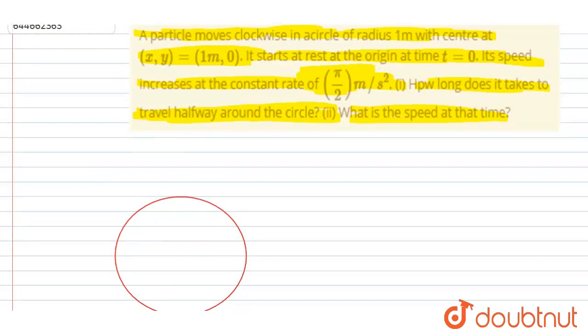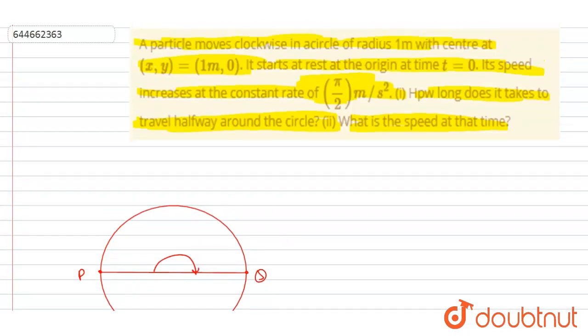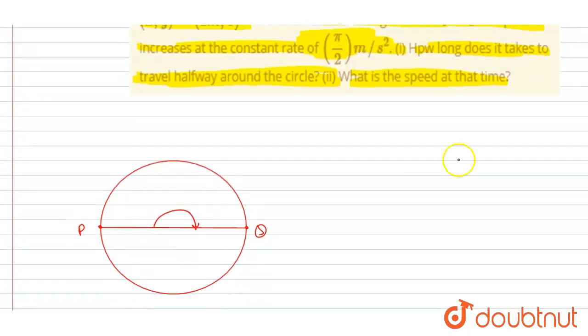it have to travel this much. So to complete this much like to go from P to Q, it have to travel this much angle. If you see, it is given that it is traveling in clockwise direction, right? So it have to travel this much.